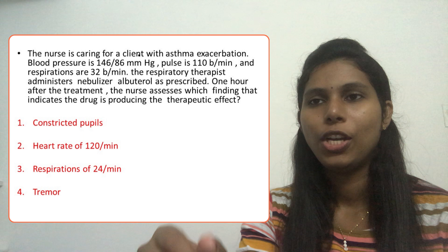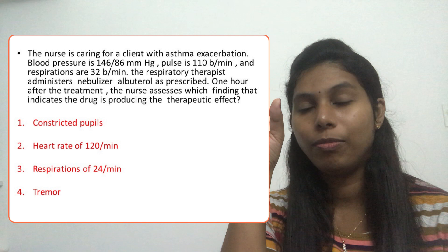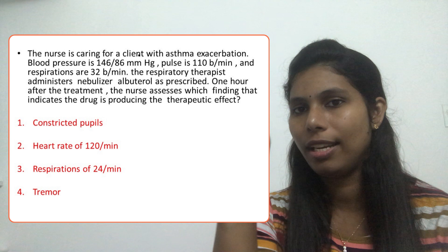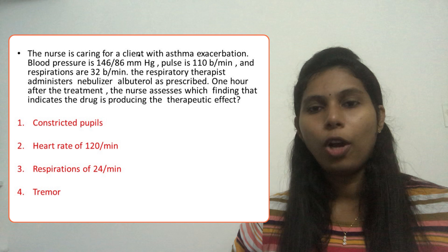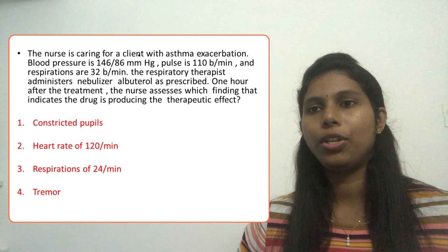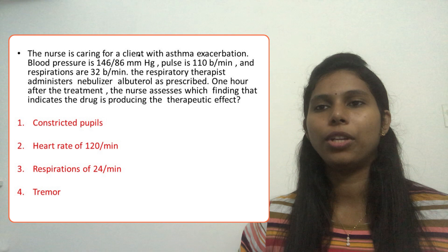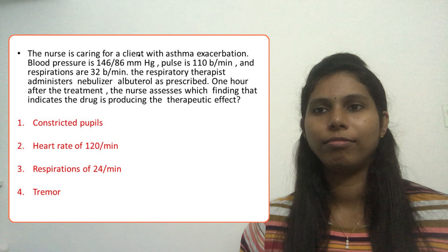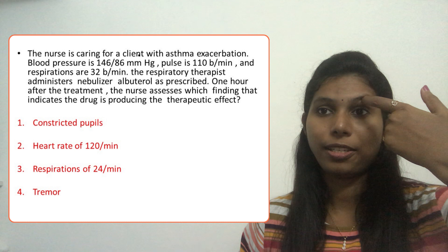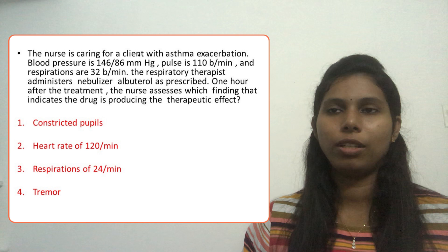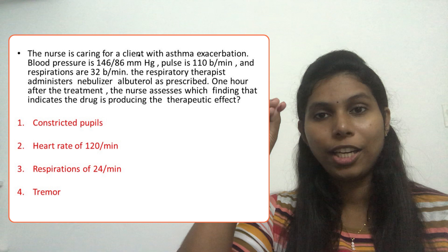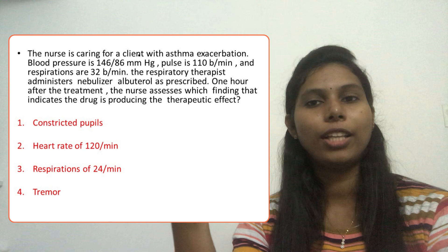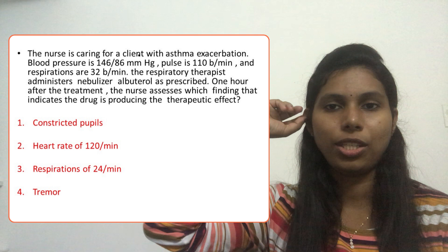We are looking for something positive. The options are: option one — constricted pupils; option two — heart rate of 120 per minute; option three — respirations of 24 per minute; option four — tremor. Out of these four options, which one looks normal or good? Definitely option three — respirations of 24. That is a normal respiratory rate. In the question, the client had 32 per minute before; now it is 24, which means it decreased — the client is no longer tachypneic, indicating the medication is working.